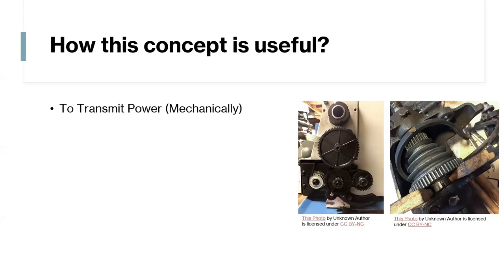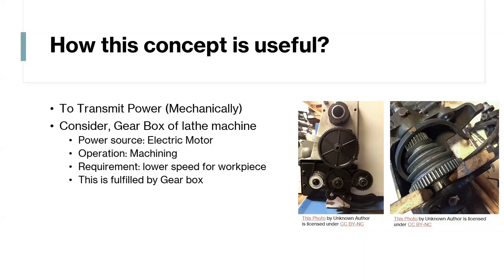First one is obviously to transmit the power, as I said earlier, mechanically. So by using motions. Next one is, let us consider gearbox of lathe machine. So its power source is electric motor. The operation which you are going to perform is machining, or let's say any other operation. So the requirement there is different speeds, whatever speed is required for the workpiece. So that speed will be lower. And the power source which you have has a higher speed. So the power source has a constant high speed and we need a lower speed for the work. So this requirement is fulfilled by the gearbox. That's why we need gears. So this is one of the significance of gear.